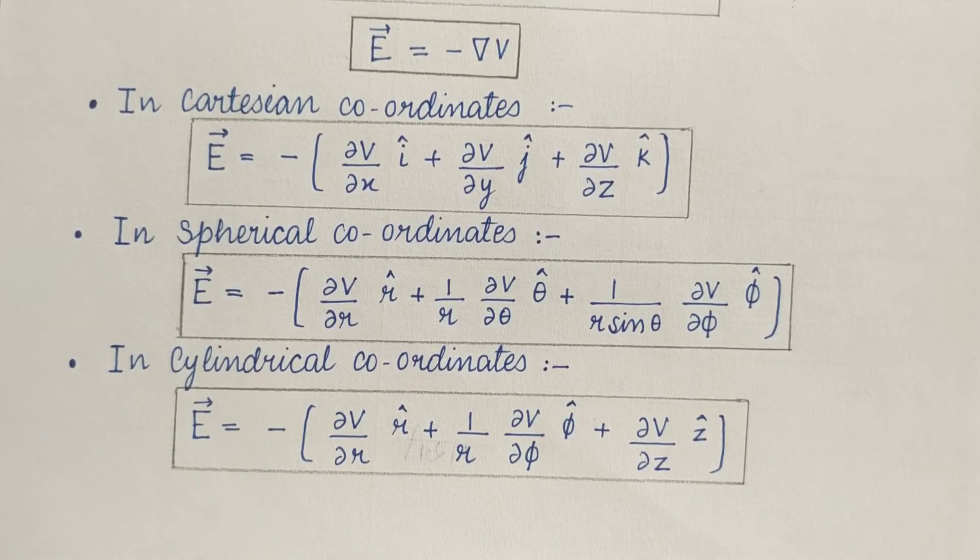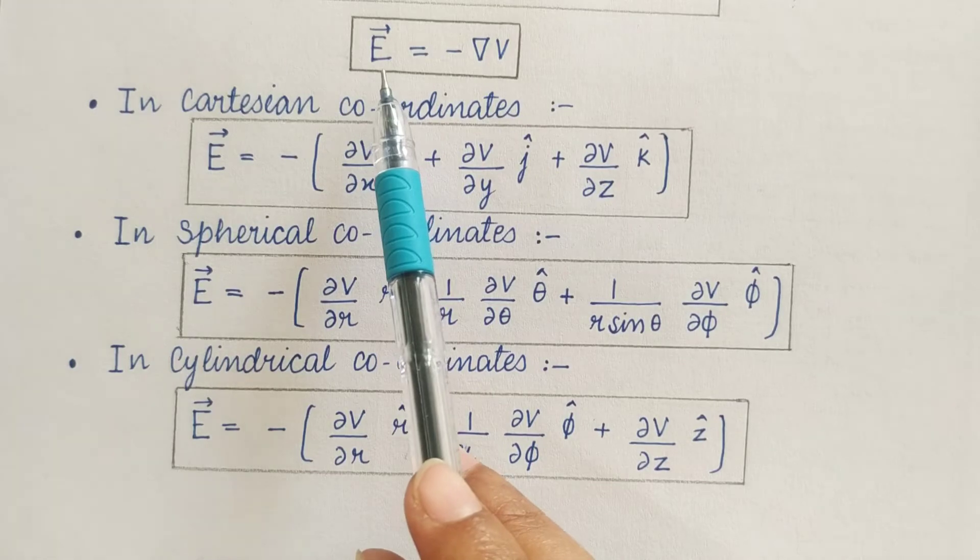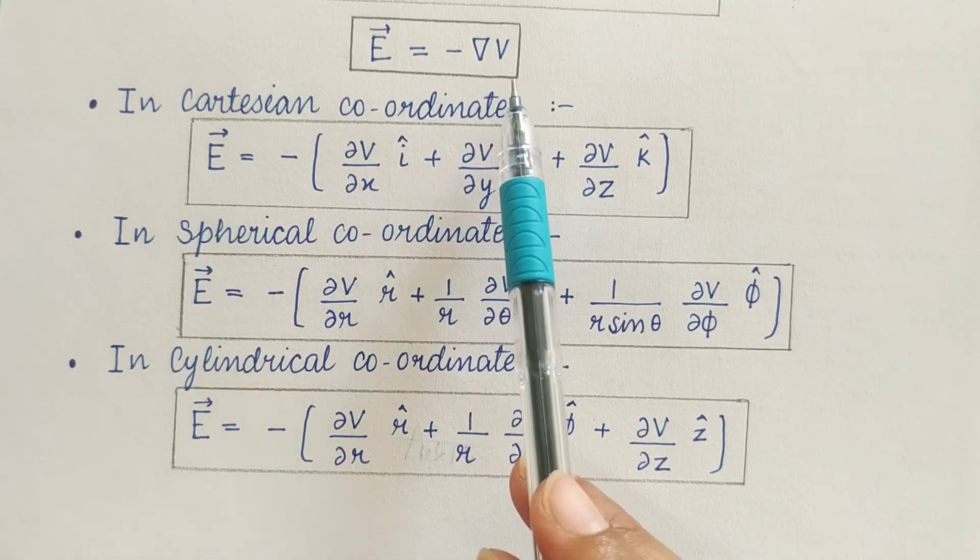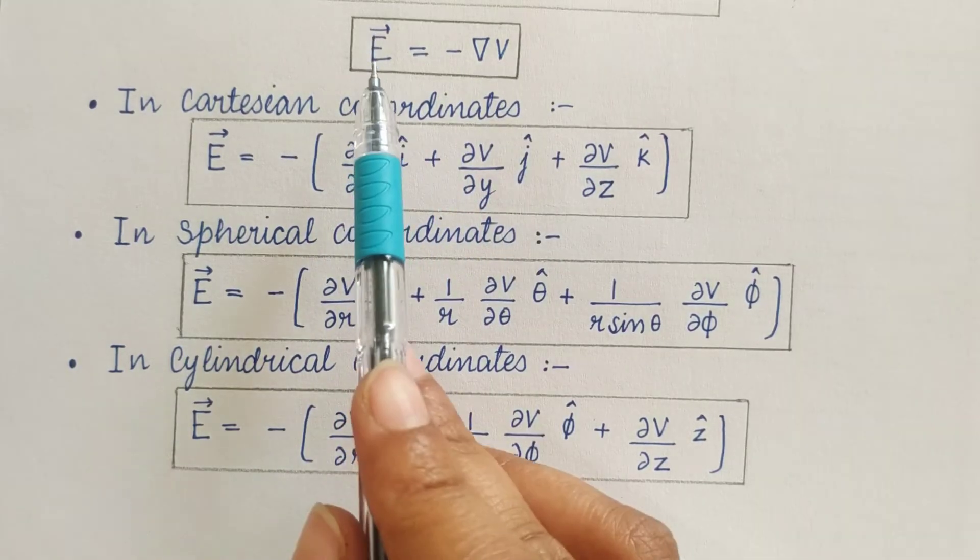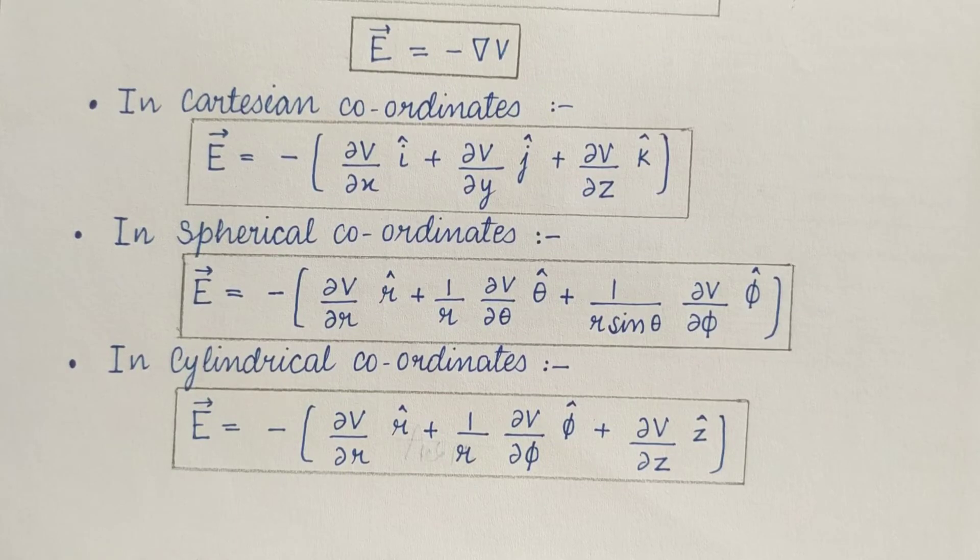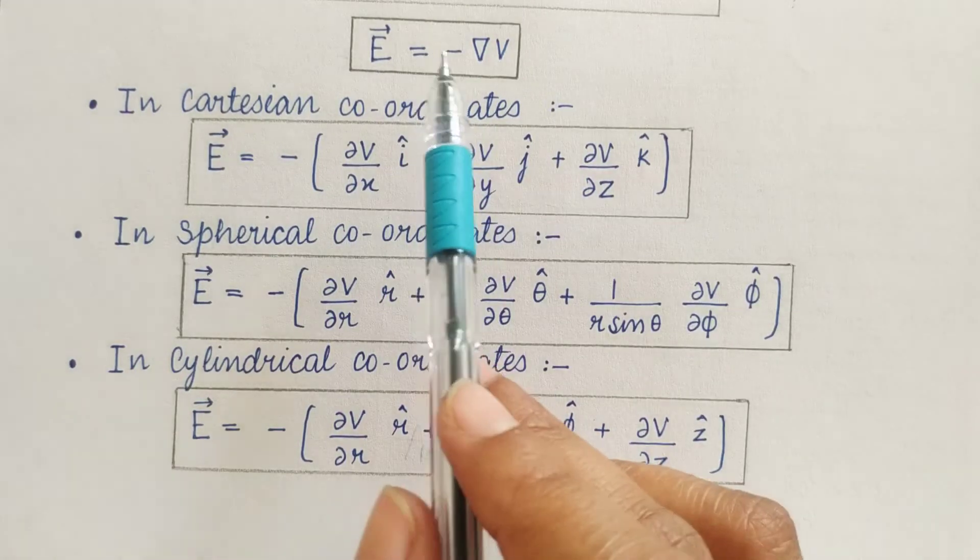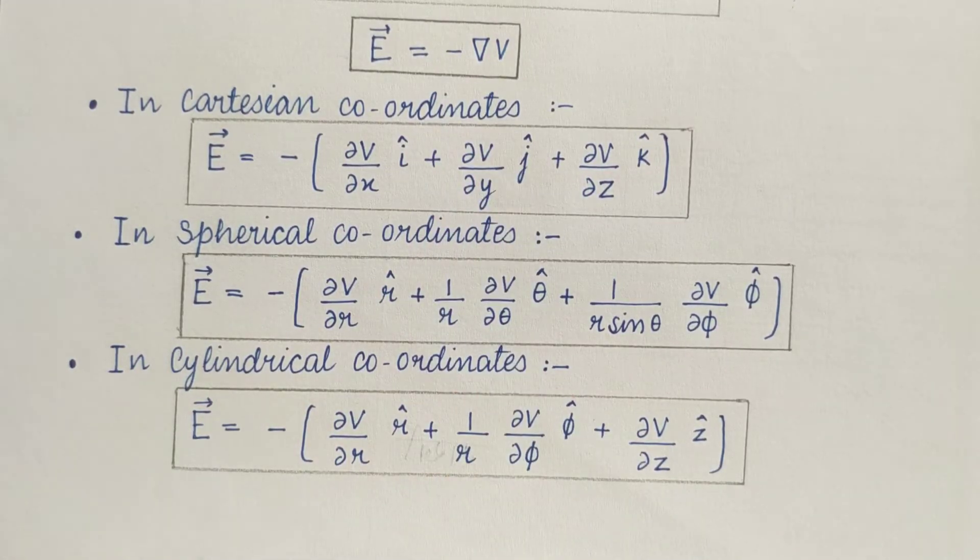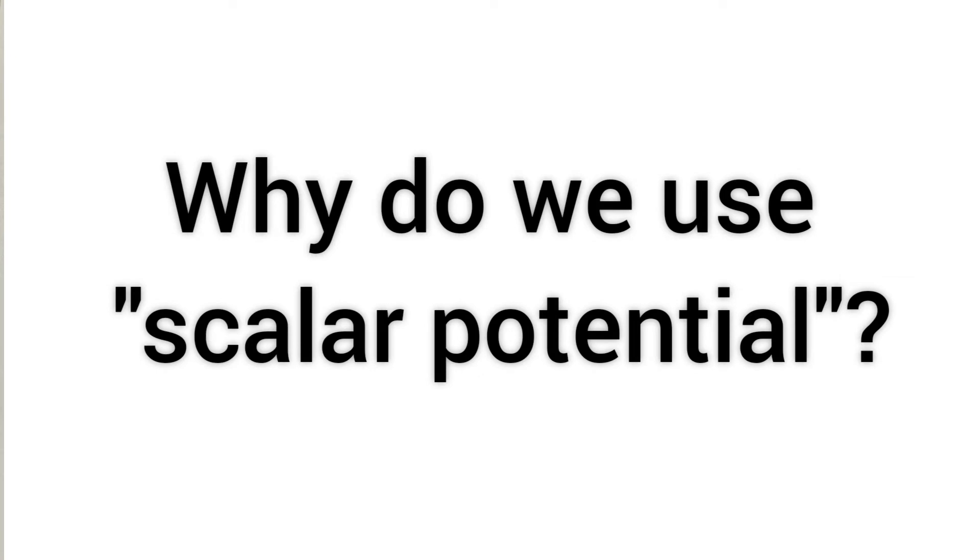Now we can see from this equation E equals minus del V that electric field E is a vector quantity and the potential V is a scalar quantity.